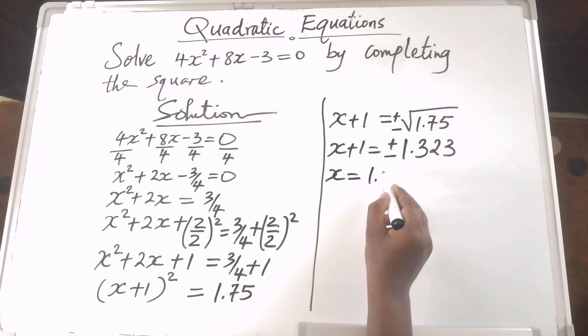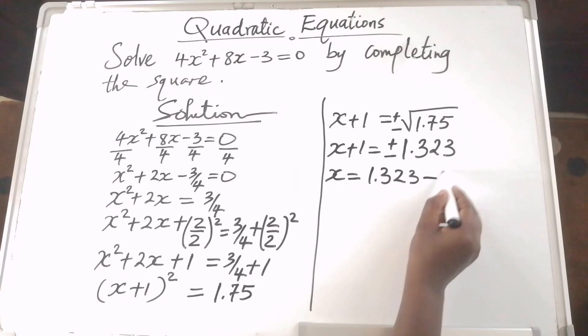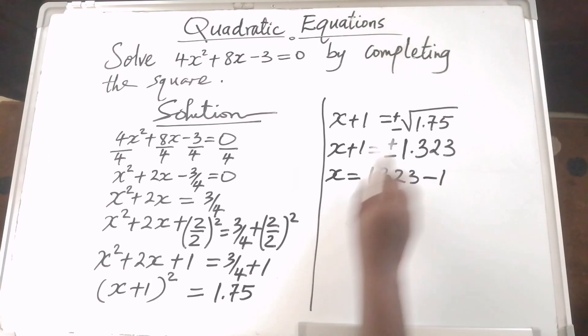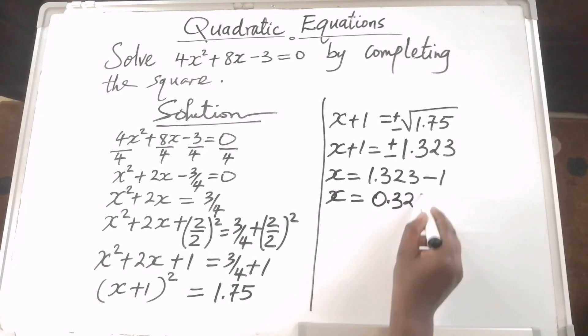To get the value of x, we will take 1.323, the positive value, minus 1. When you bring 1 to the other side of the equation, x equals 1.323 minus 1, which gives us 0.323.